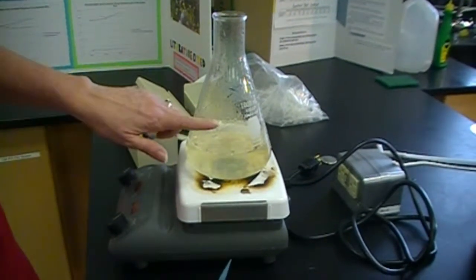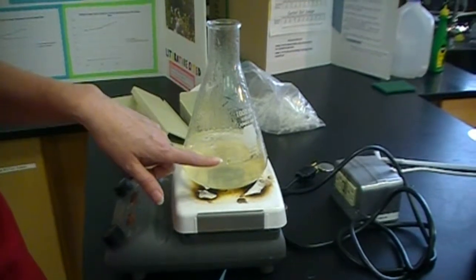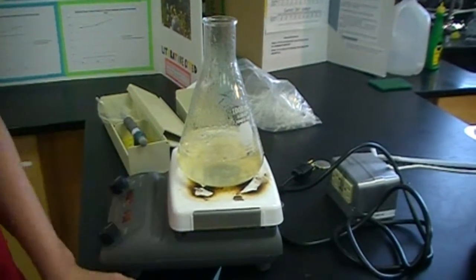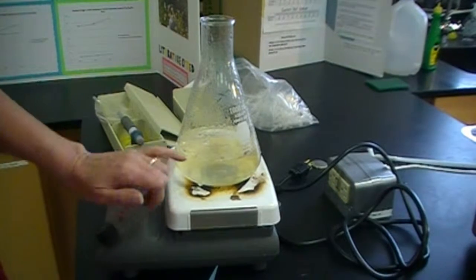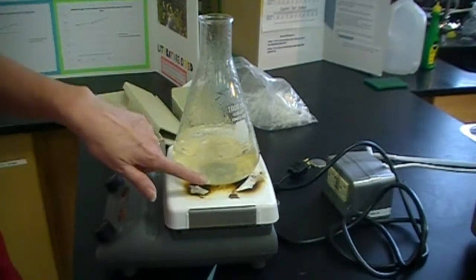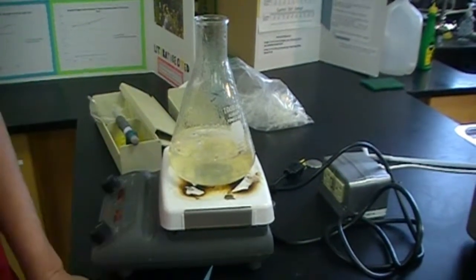So at first, as you can tell, I have an Erlenmeyer flask. I put in 400 mls of distilled water. They give you a little pouch of the NGM agar. I just simply open the pouch, poured it in, and let it come up to boiling.